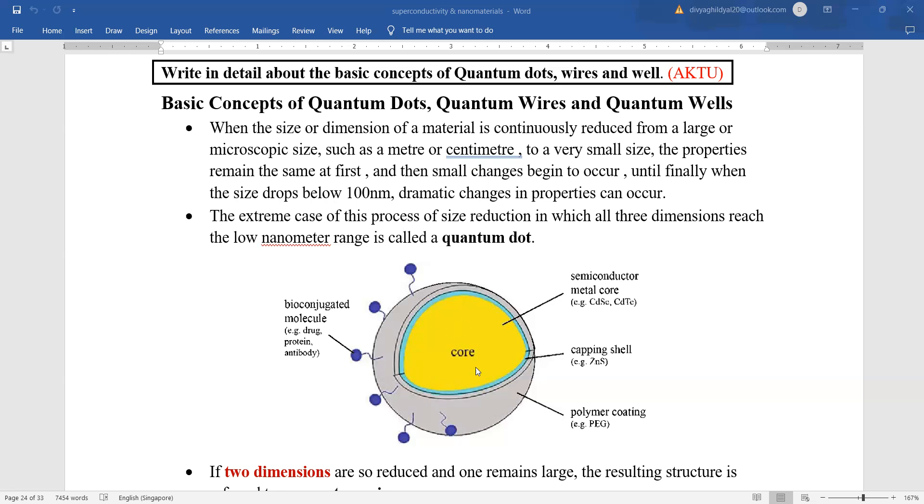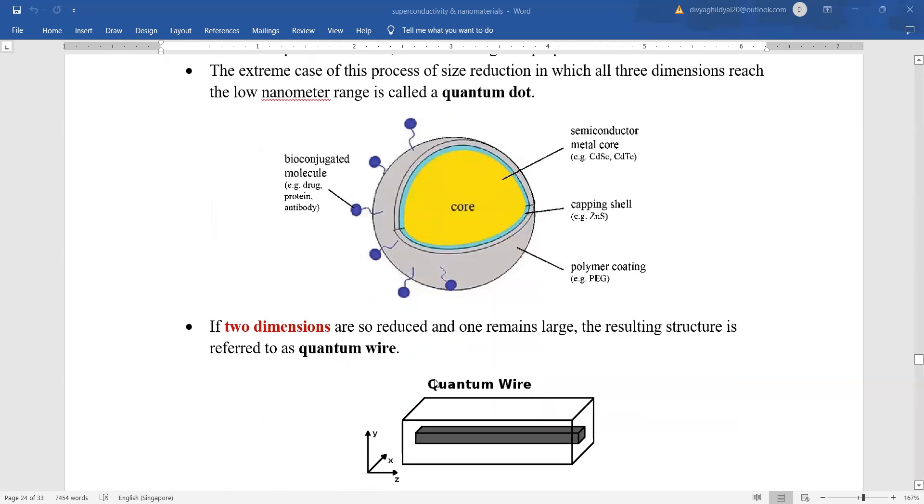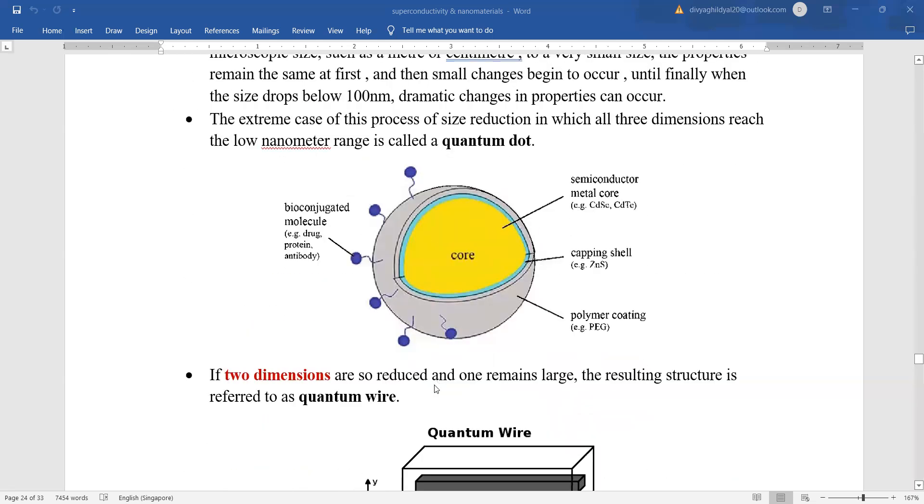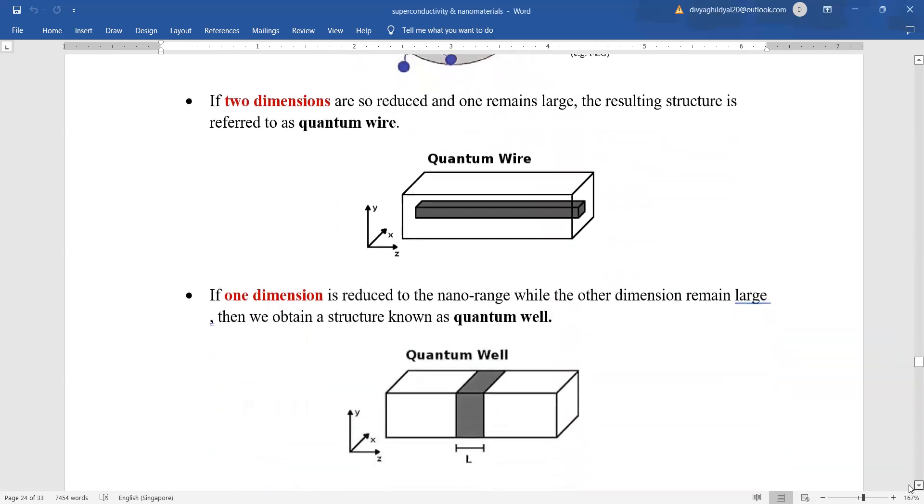It comes from the word dot. As you can see here in this figure, it is in the shape of a dot. If two dimensions are reduced such that one remains large, the resulting structure will be known as a quantum wire. You can even remember this like it is coming in the shape of a wire. If one dimension is reduced to the nano range while the other dimensions remain large, then quantum well is obtained.